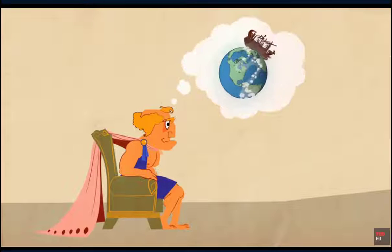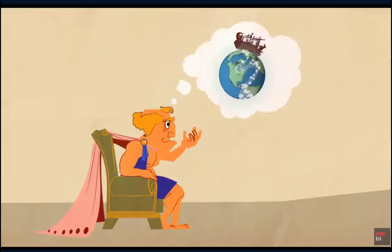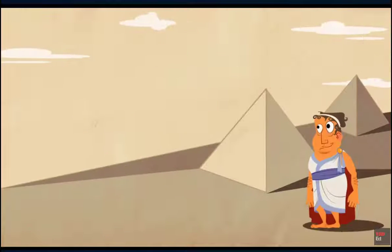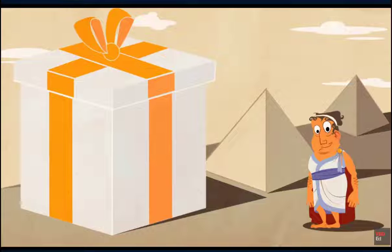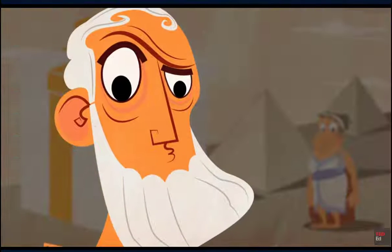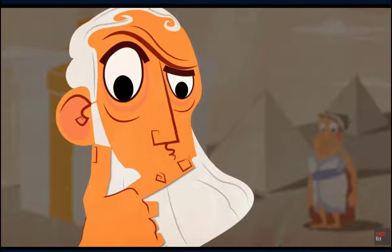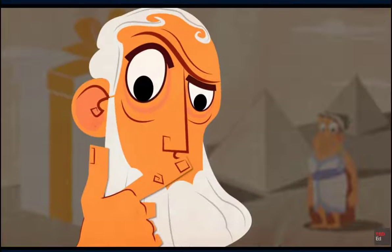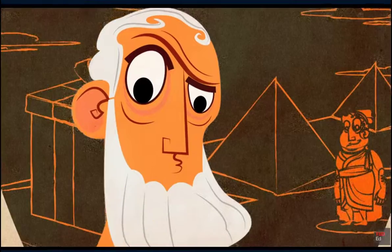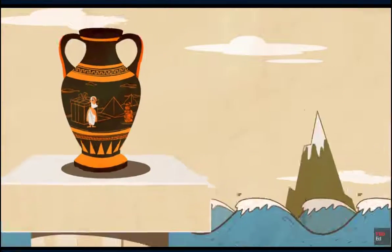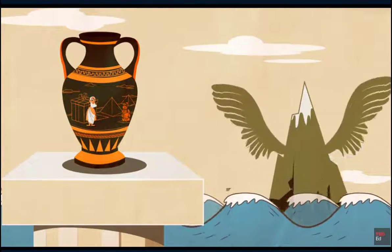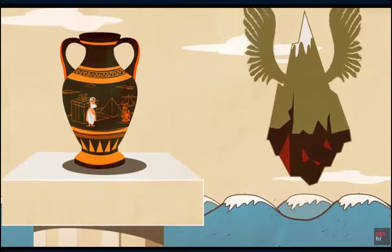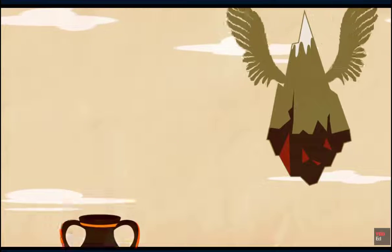Hieron wanted to construct the largest ship ever, destined to be given as a gift to Egypt's ruler Ptolemy. But could a boat the size of a palace possibly float? In Archimedes' day, no one had attempted anything like this — it was like asking whether a mountain could fly.